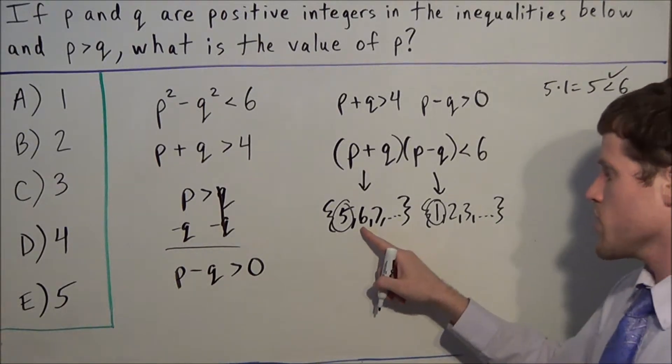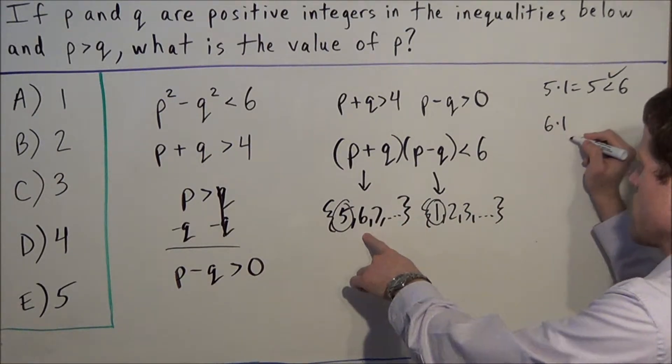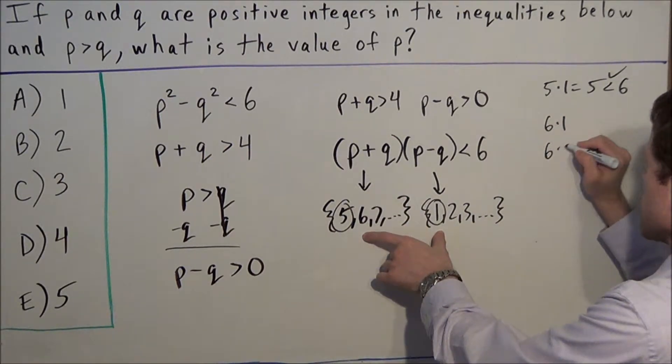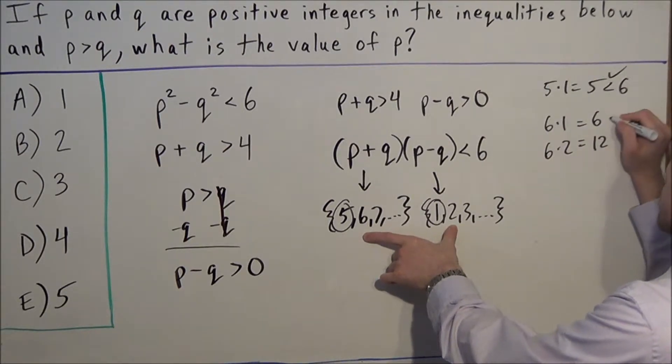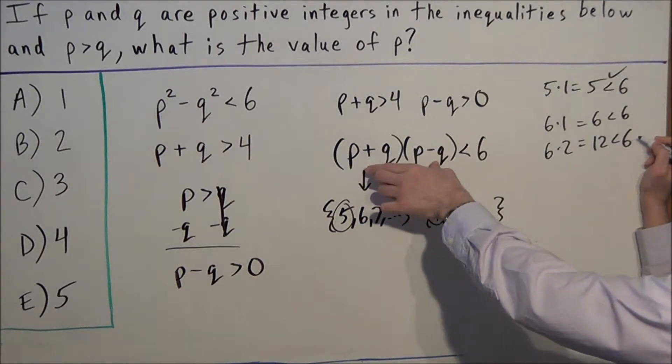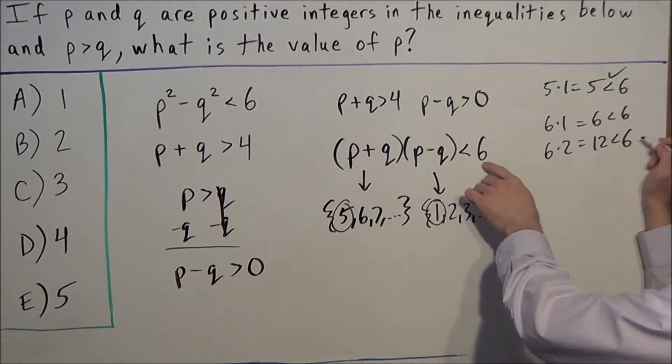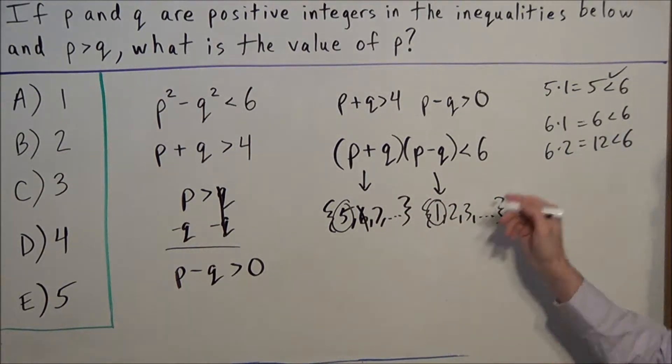But notice what happens if we try 6. If we do 6 × 1 or 6 × 2, we get 6 or 12. These do not satisfy the inequality that the product has to be less than 6. So 6 doesn't work.